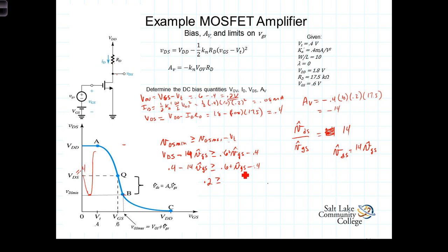Now we've got VGS hat here, and we've got minus 14 VGS hat, so add it to both sides and you get 15 VGS hat, or VGS hat, which is the amplitude, the distance that it can swing off of there, must be less than or equal to 0.2 divided by 15, and that equals 13.3 millivolts.